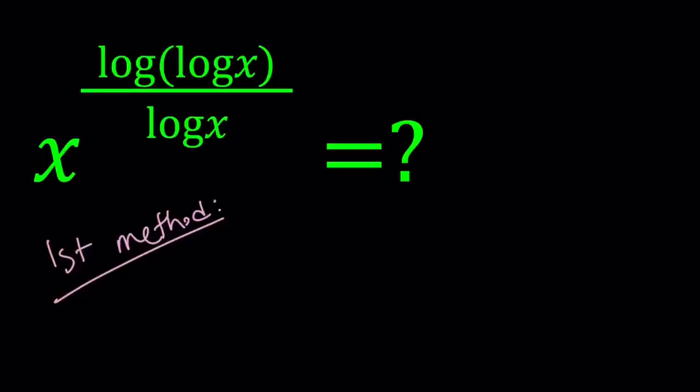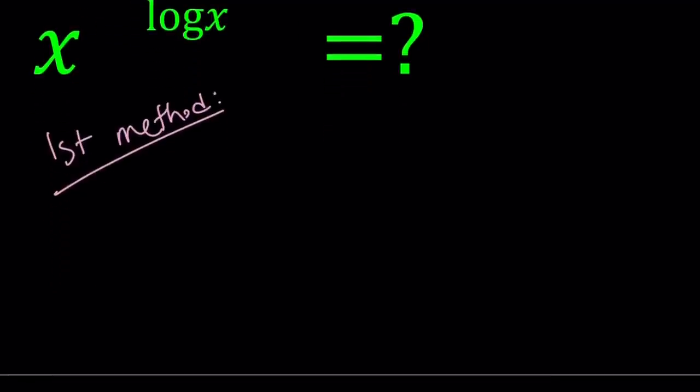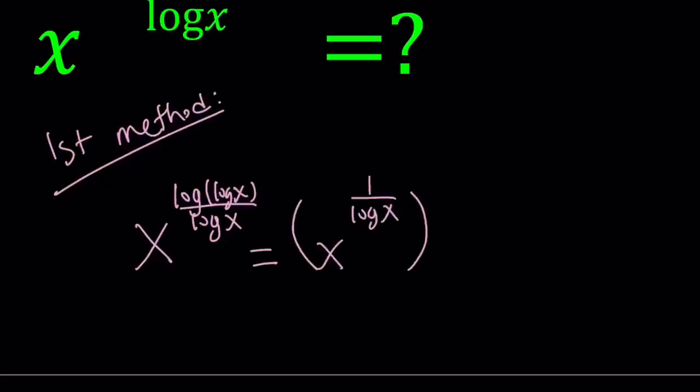The first method involves the following. We're going to write this as x to the power. So our original expression is x to the power log log x divided by log x. Let's start with the original. And I'm going to write it as x to the power 1 over log x to the power log of log x. So I kind of separated the numerator and the denominator because they're being multiplied. And one of them is the reciprocal. So when they're multiplied, they just become a fractional something.